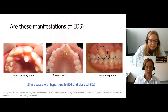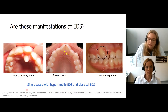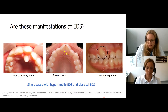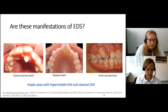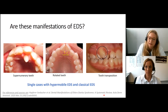So the question is, are these manifestations of EDS? In the medical literature, different dental manifestations of EDS have been described, like supernumerary teeth, rotated teeth, or tooth transpositions. A tooth transposition is when teeth switch their places, supernumerary teeth are extra teeth, and rotated teeth are simply not in the right order. These findings have been described only in single case reports, and we're not sure if these are manifestations of EDS or just coincidental findings.